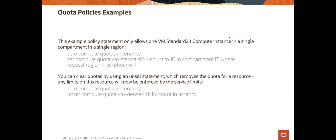Here are some other examples. The first example only allows one compute instance in a compartment called IT for a single region. The first statement says zero compute quotas in tenancy, so it removes access to all compute resources. Then it allows only one kind of instance — vm-standard2-1 — and allows only up to ten of these in the compartment IT, and only in the us-phoenix region.